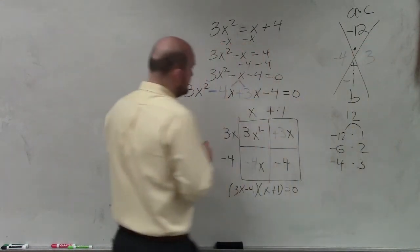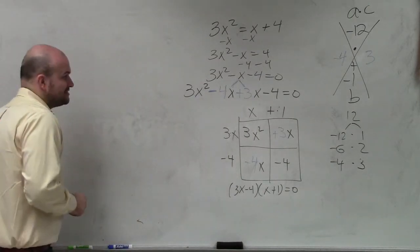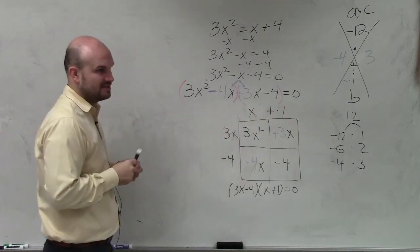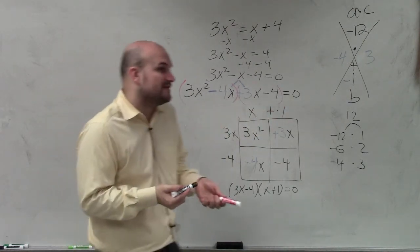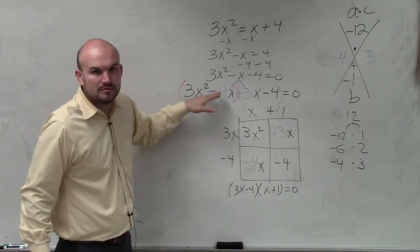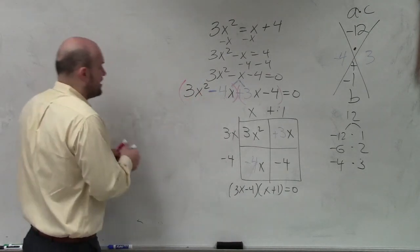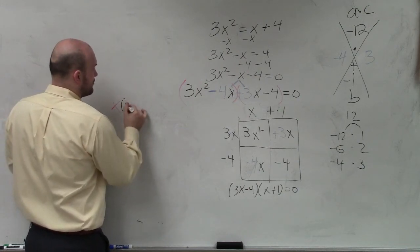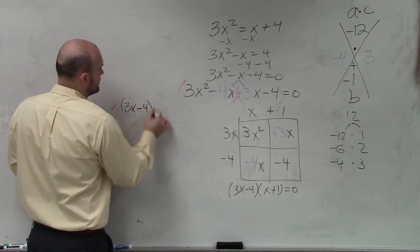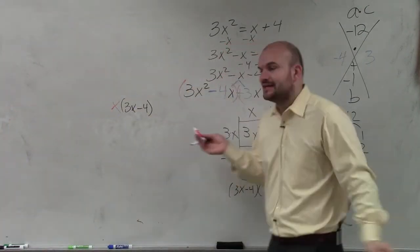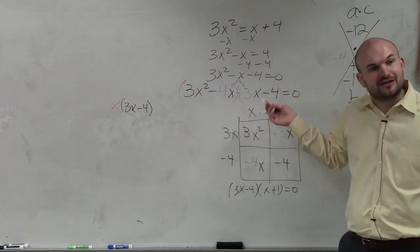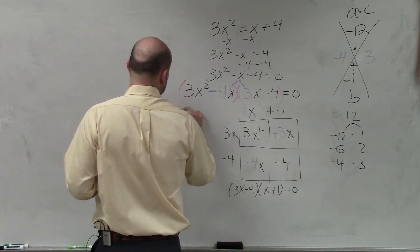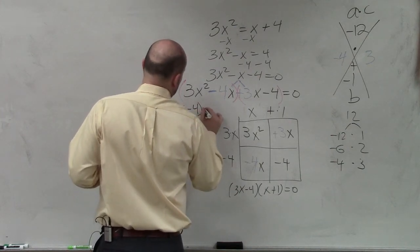OK. The other way you guys can do this is you can simply just group them, the first two terms and the last two terms. And then say, what do they have in common? So what do these two have in common? An x. So guess what? Factor out an x. So if you factor out an x, you're left with 3x - 4. And then these two, they don't really have anything in common. So you can always factor out a positive 1. And when I factor out a positive 1, I'm left with 3x - 4 = 0.